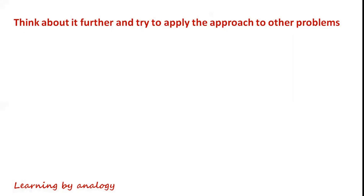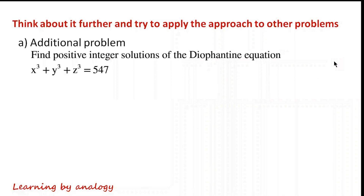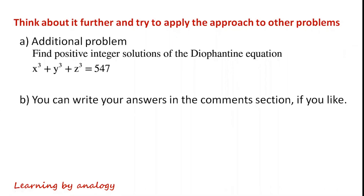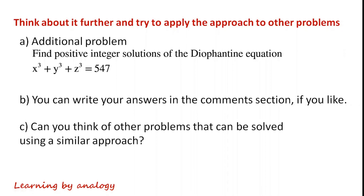Think about the thought process for the previous question further and try to apply the approach to other problems, such as this one: find positive integer solutions of the Diophantine equation x cubed plus y cubed plus z cubed equals 547. You can write your answers in the comments section. Can you think of other problems that can be solved using a similar approach? Thank you for watching — hope you found this video helpful. See you next time.